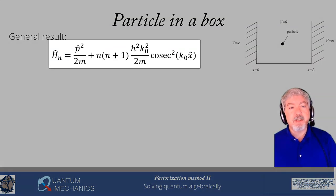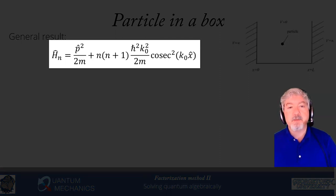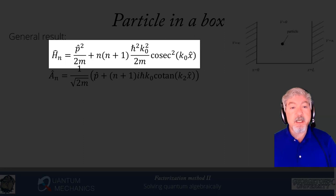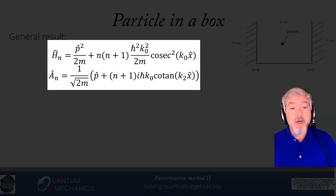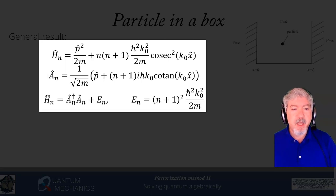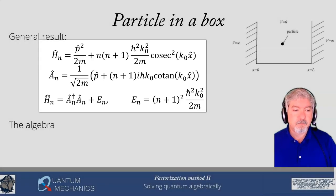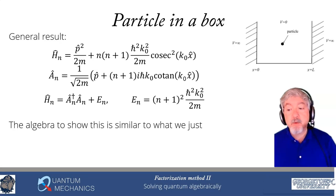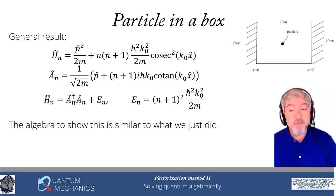The general result from the factorization chain: Hn has a potential n(n+1) · ℏ²k0²/(2m) · csc²(k0x̂). The lowering operator is An = p̂ + (n+1)iℏk0 cot(k0x̂). And Hn = An†An + En, where En = (n+1)²ℏ²k0²/(2m). The algebra is similar to what we've done before — you just have to keep track of the appropriate factors of n. I recommend pausing the video and going through it, because similar problems will appear on homework.